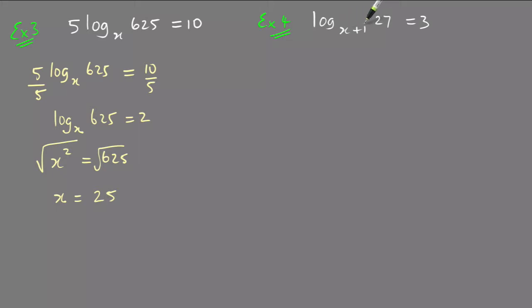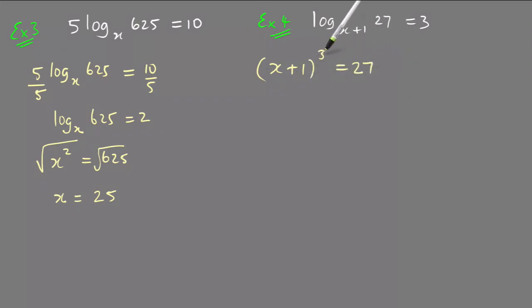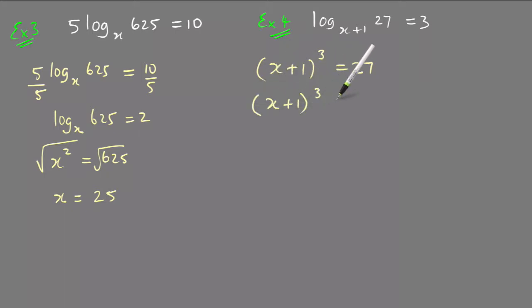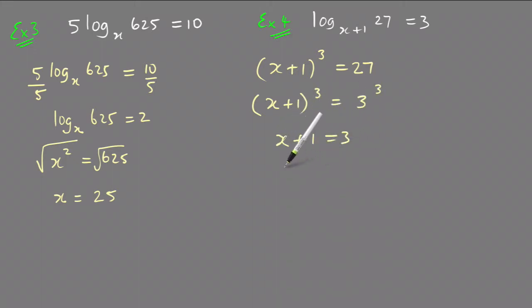Example 4: log_(x+1)(27) = 3. Once again, make a power statement — this is the base — so (x+1)³ = 27. Noting that 27 = 3³, that means the bases must be equal: x+1 = 3, therefore x = 3−1 = 2. So that's the answer for this one.